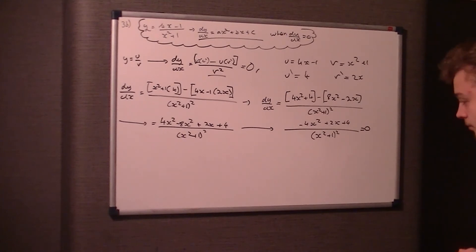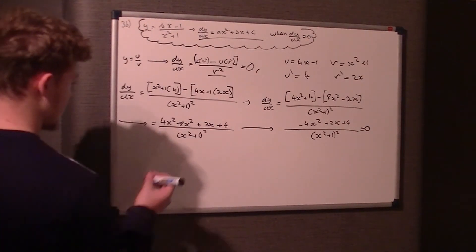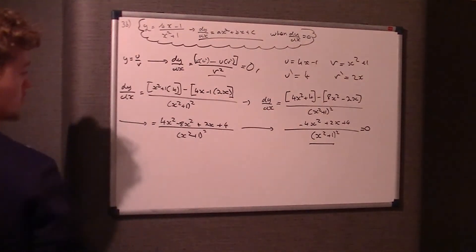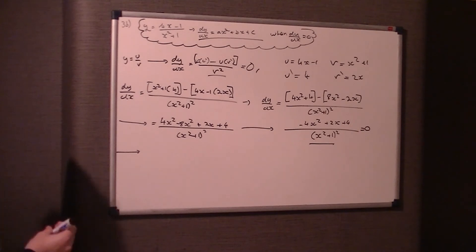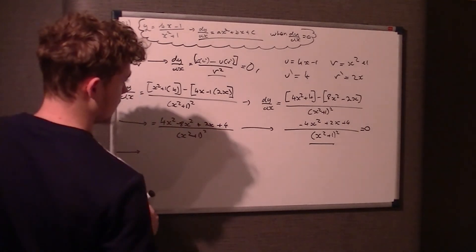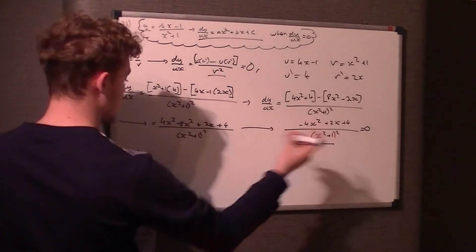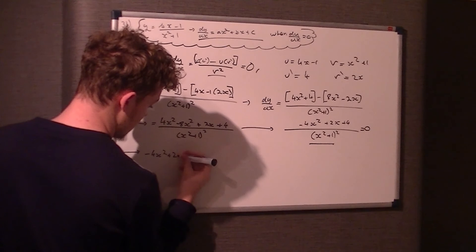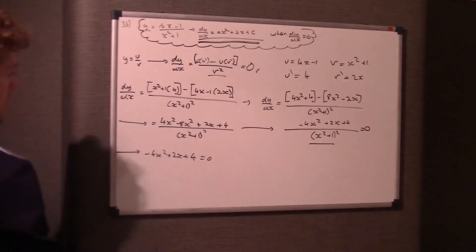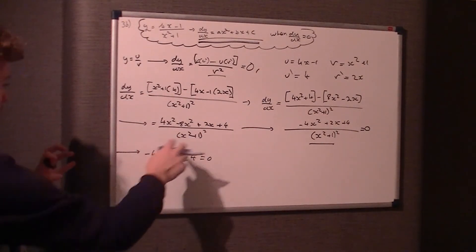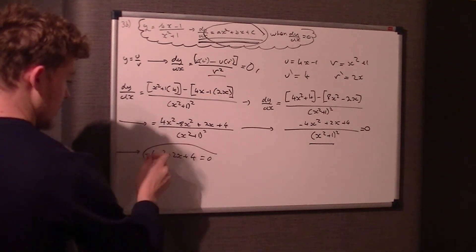Times both sides by (x² + 1)². That's why they didn't need to expand that, would have been a waste of time. What we're just left with is -4x² + 2x + 4. I kept my eye on this formula because it wanted it in this kind of format. That's why I didn't factorise it.